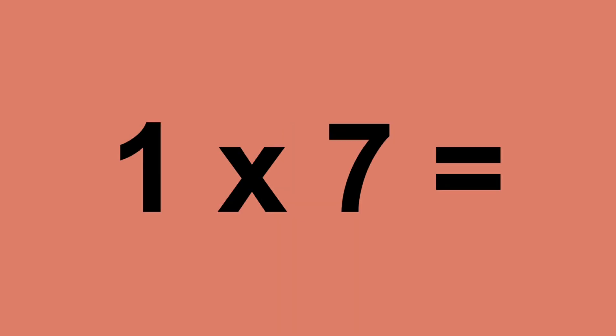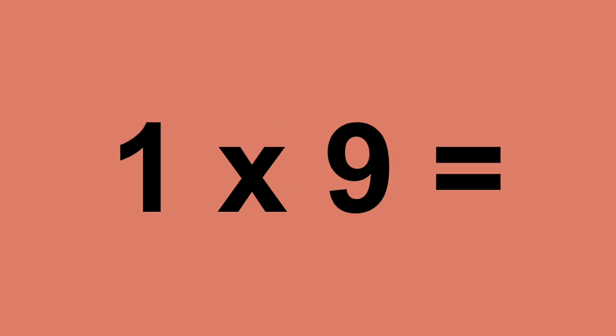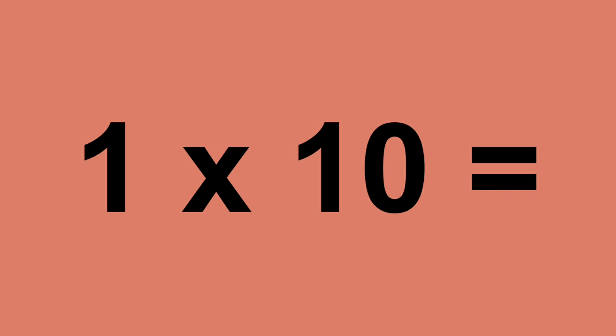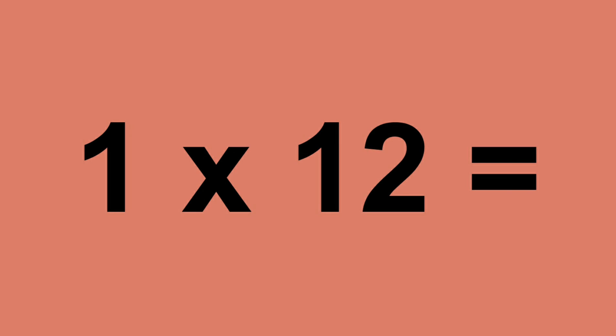One times seven equals seven. One times eight equals eight. One times nine equals nine. One times ten equals ten.